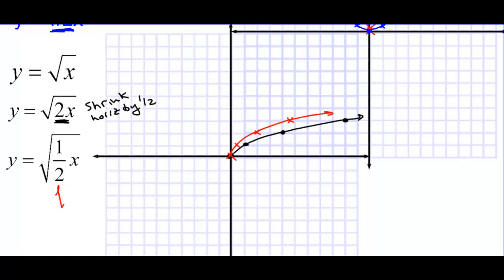If you multiply the inside by one half, this is stretch horizontally by 2 — you've got to think reciprocal. So we're going to take these x-values and multiply them by 2. So we are stretching horizontally by a factor of 2.